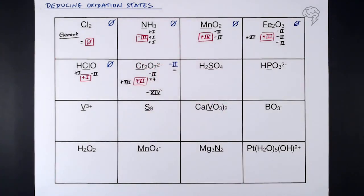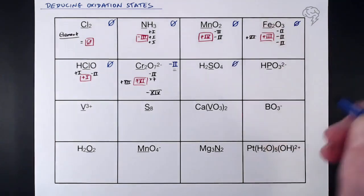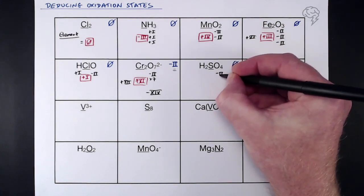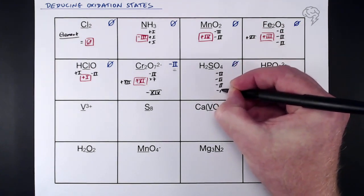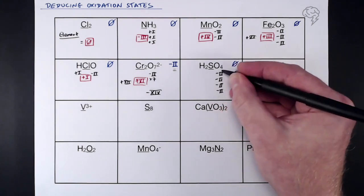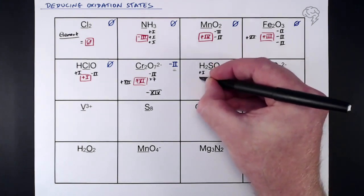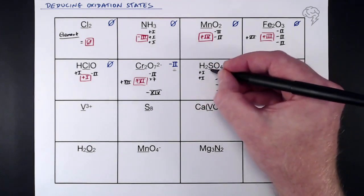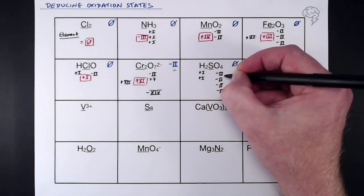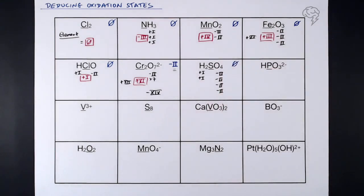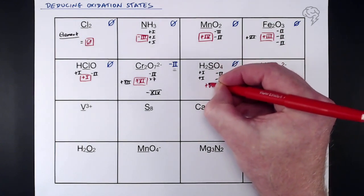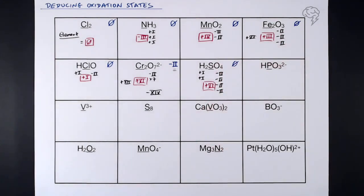Sulfuric acid, H₂SO₄: overall oxidation state of zero. We've got four lots of -2 for oxygen, giving -8 in total, and two lots of +1 for hydrogen, giving +2. So -8 + 2 = -6 overall from those. We need to get from -6 to zero, so our sulfur must be +6. That's the oxidation state of sulfur in H₂SO₄.